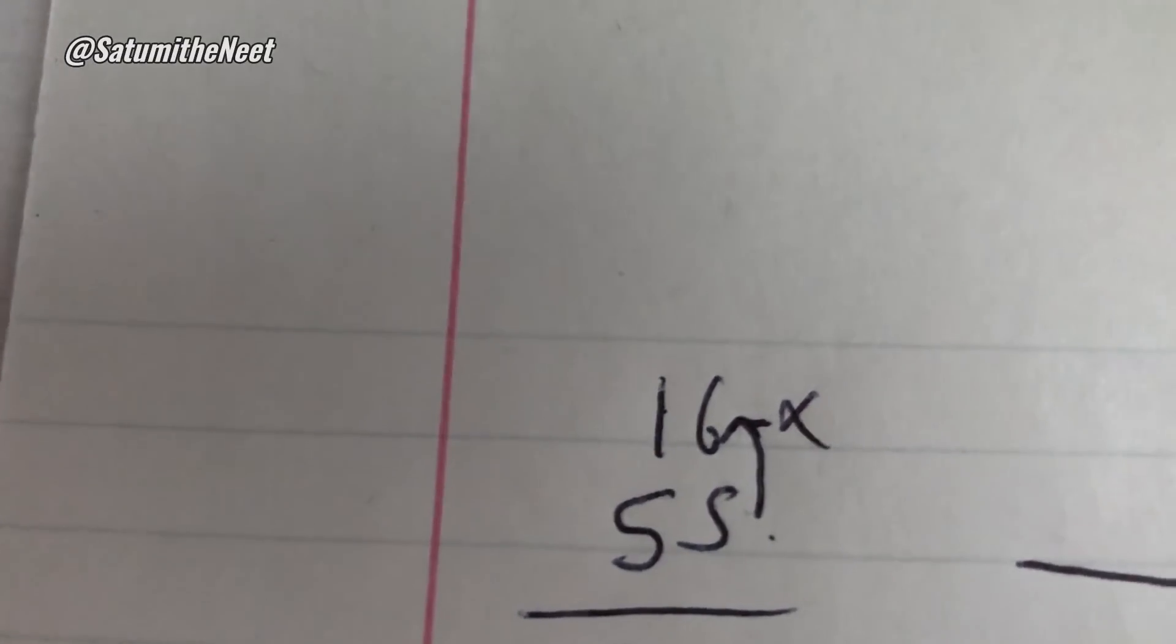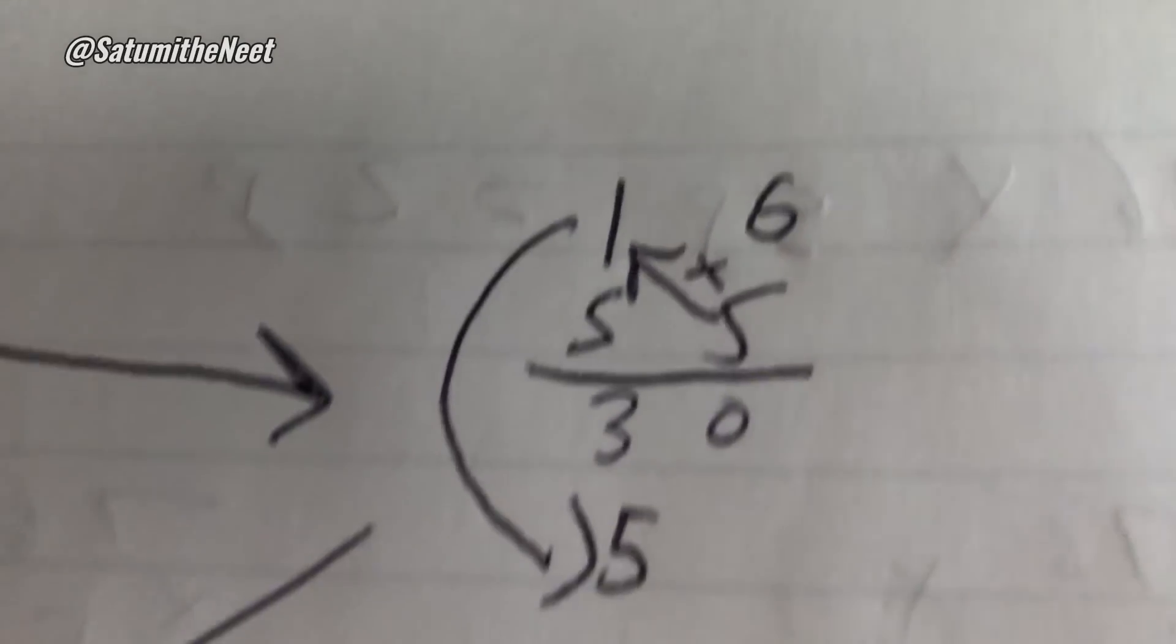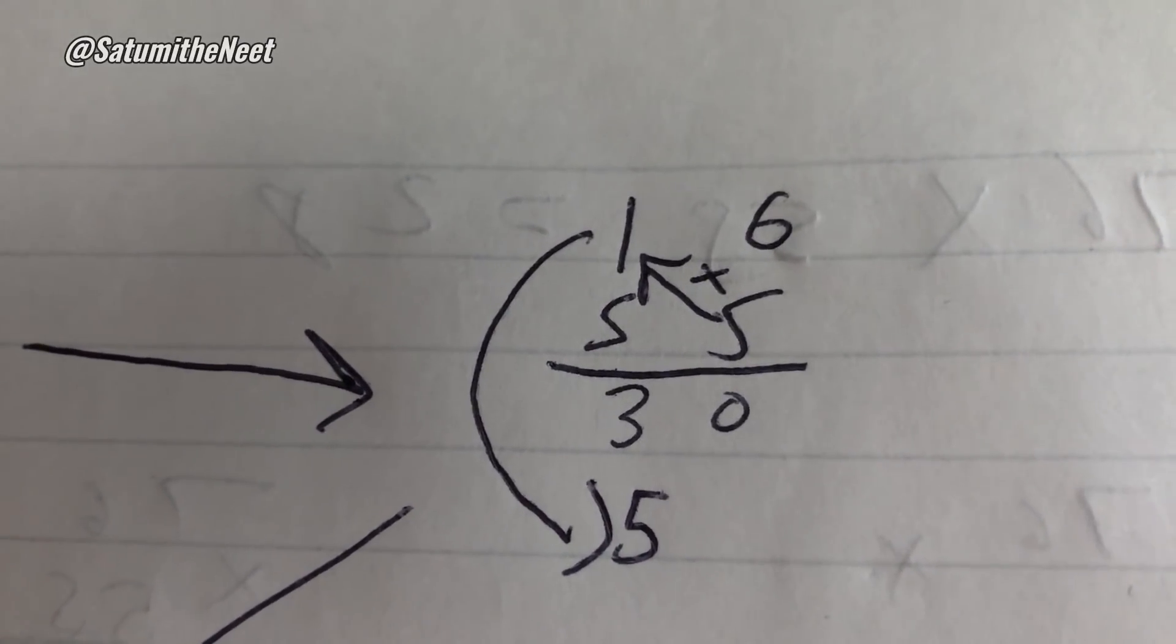Then you multiply the bottom left number to the upper right to get 30. Then you cross multiply the bottom right to the top left to get 5. And because you had to cross multiply, the 5 sits under the 3.